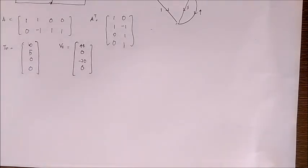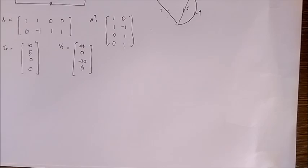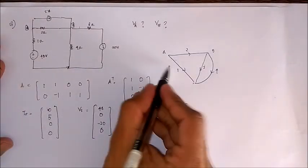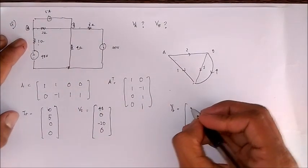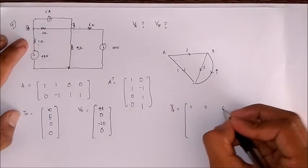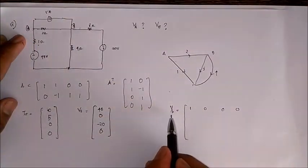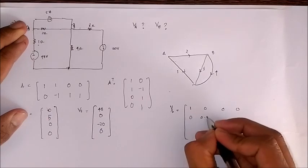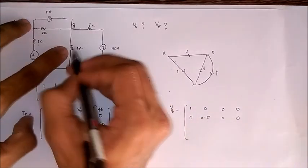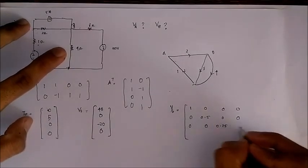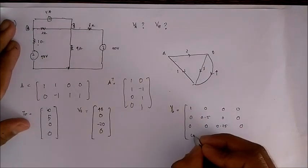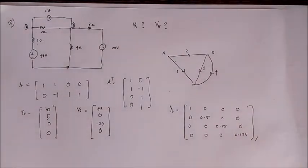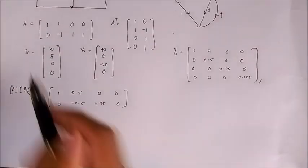Now we write the admittance matrix YB, which is always a square matrix. In the first branch there is 1 ohm, so the admittance is 1. In the second branch there is 2 ohms, so the admittance is 0.5. In the third branch there is 4 ohms, so the admittance is 0.25. In the fourth branch the admittance is 0.125. This gives us our diagonal admittance matrix YB.